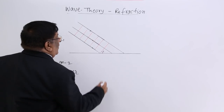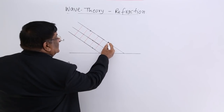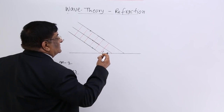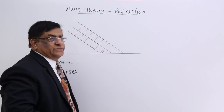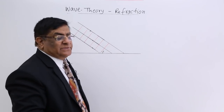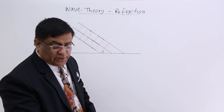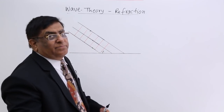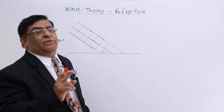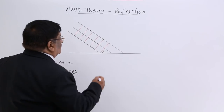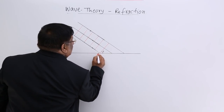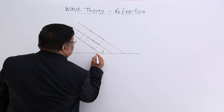Now all the points of this surface become secondary sources. When they become secondary sources, they start making their own wavelets.